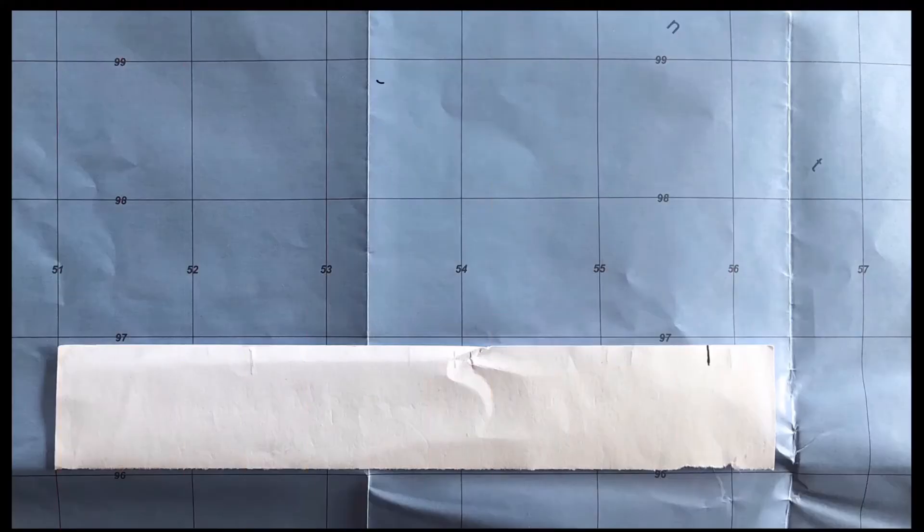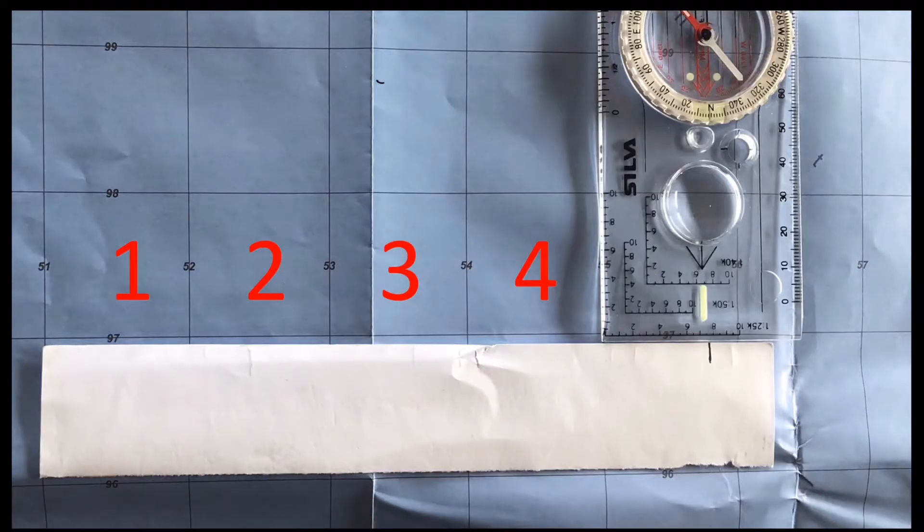So this time I'm gonna line up my piece of paper on one of the grid squares. Each of the grid squares is one kilometre, so as we count across we see we have 1, 2, 3, 4 kilometres, and if I bring in the compass and use the roamer, then you can see it brings it up to just under 4.8 kilometres.